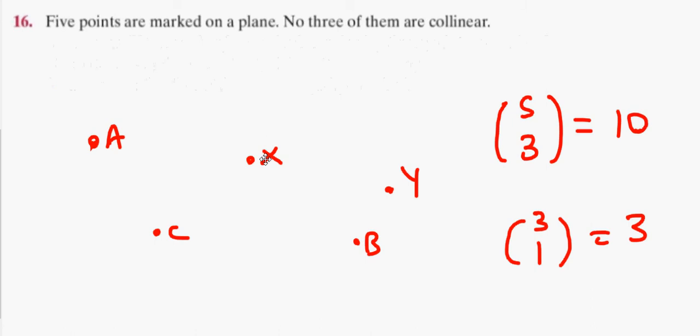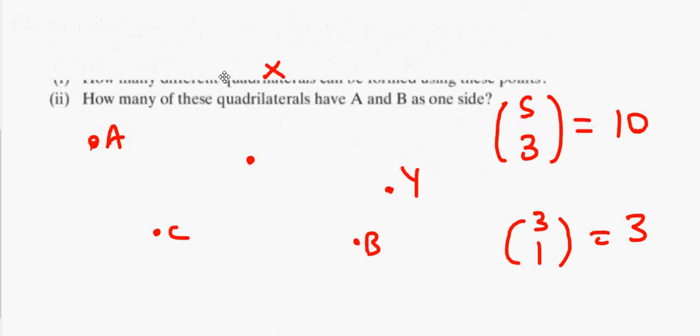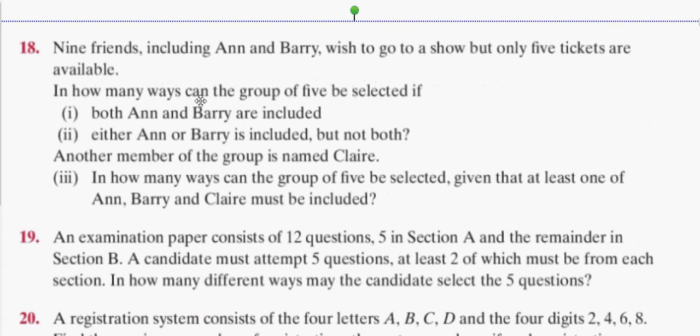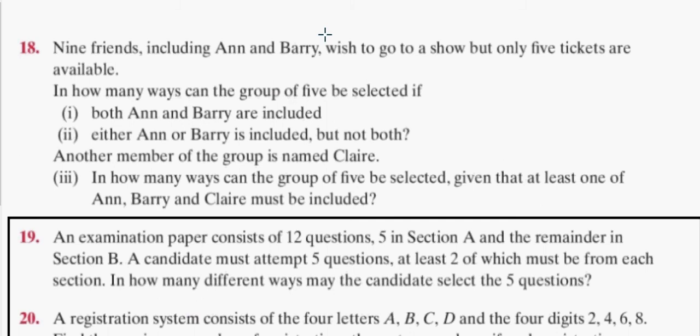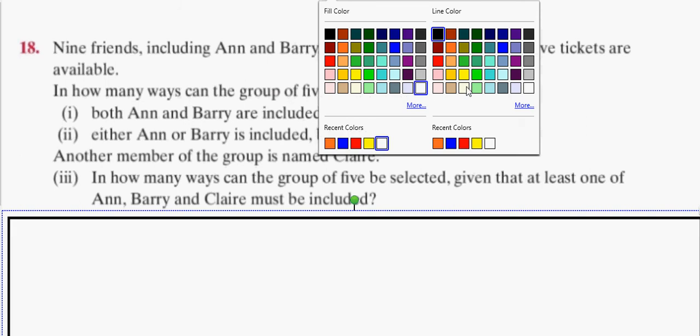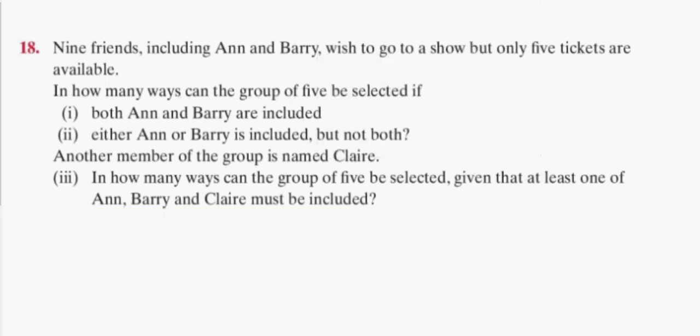Okay, let's move on to 18 if it's here. Nine friends, including Ann and Barry, wish to go to a show, but only five tickets are available. In how many ways can the group of five be selected if both Ann and Barry are included? Nine friends, Ann and Barry. Five tickets.